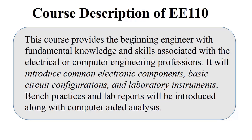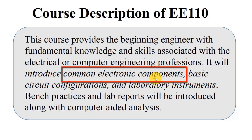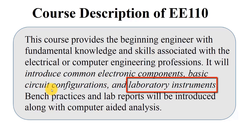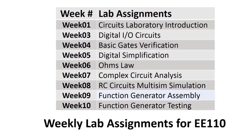I will highlight key comments of student feedback and end with some conclusions about the future. Here is the course description of EE 110. Three basic ideas are provided to students: first, an introduction to electronic components — namely logic gates, resistors, capacitors, and voltage sources. Second, recognizing circuit configurations such as the difference between a series and parallel connection. Finally, we teach them how to use laboratory instruments such as an oscilloscope, voltmeter, ohmmeter, and ammeter, and at the end of the course, how to use a function generator.